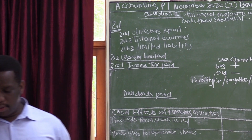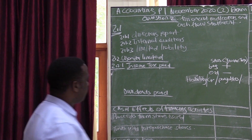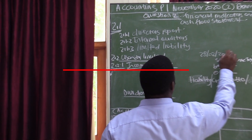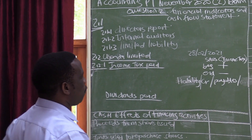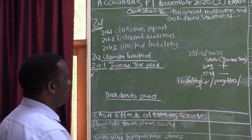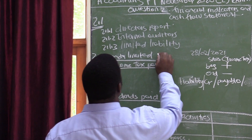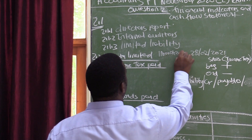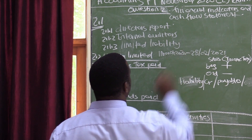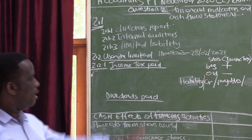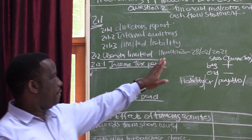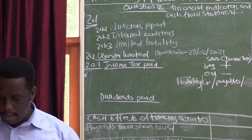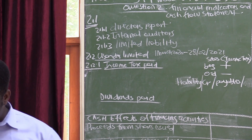Usanda Limited. The financial year end is 28 February 2021. Remember, the financial year is a period of 12 months. So if the year end is 28 February 2021, it means that the year started on the 1st of March 2020. So the accounting period starts on the 1st of March 2020 and ends on 28 February 2021. The name of the business is Usanda Limited.